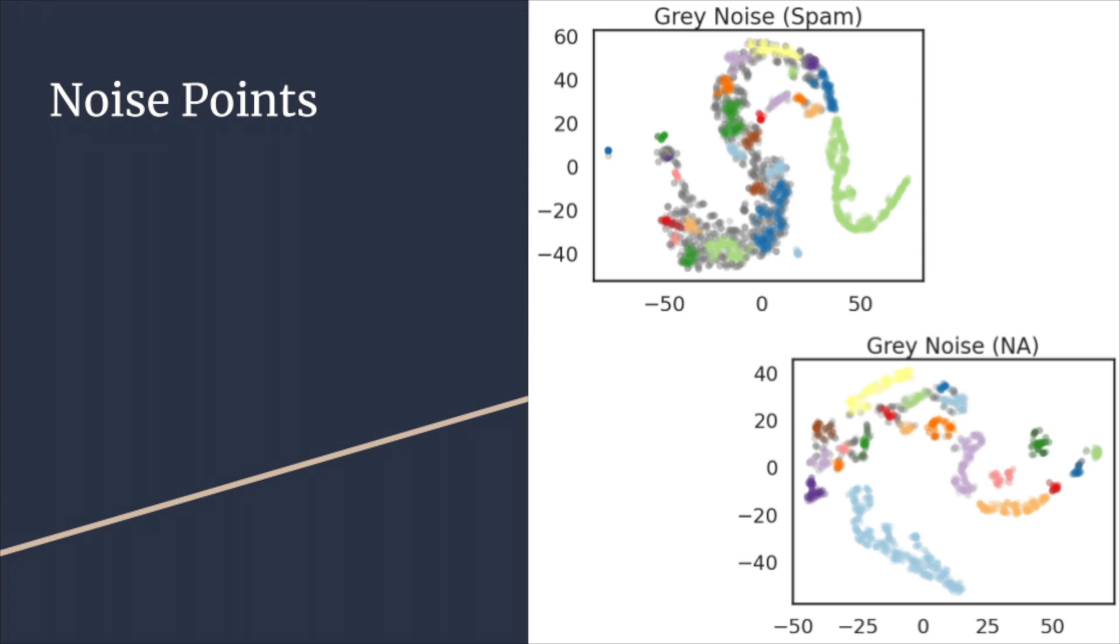One thing that we notice is that with the noise points, we were able to identify a much smaller amount of noise within the spam graph. This means that the data is likely more focused and less variable within the non-spam graph, as opposed to a lot of the gray dots up there in the spam graph.